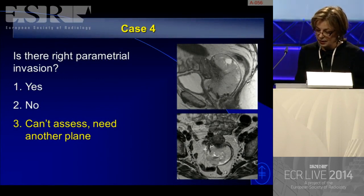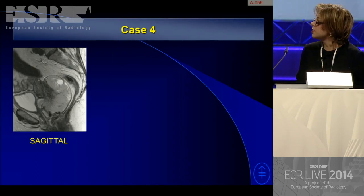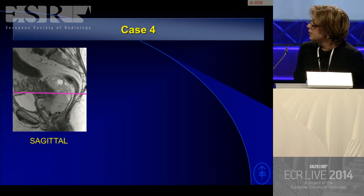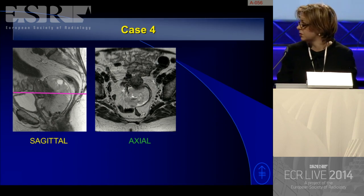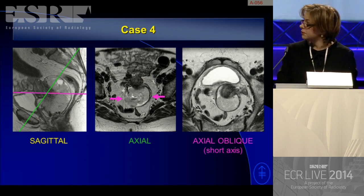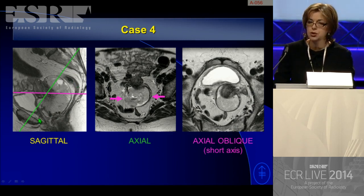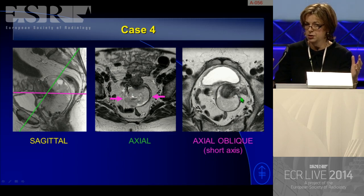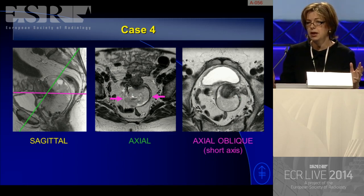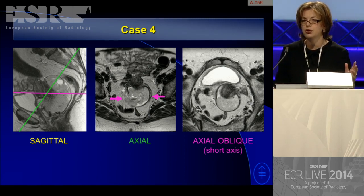The correct answer is cannot assess — you need a plane perpendicular to the tumor. When you use a true oblique axial (perpendicular to the cervix or tumor) rather than straight axial, you can clearly see the cervical stroma is completely intact — the tumor is expanding the cervix but not invading beyond the stroma into the parametrium. It is very important to get the correct imaging plane, especially with large tumors when staging cervical cancers. The oblique axial, perpendicular to the tumor, is the recommended approach.